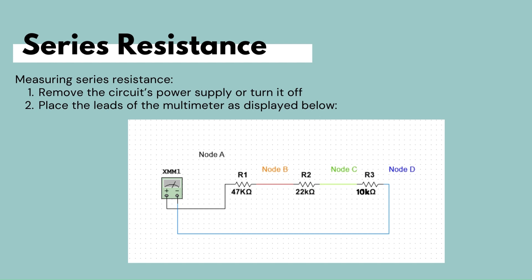To measure the resistance of a series circuit, we identify the different nodes. The 47kΩ resistor connects to the 22kΩ through node B, and the 22kΩ connects to the 10kΩ through node C. To measure the combined series resistance, we connect the positive lead of the multimeter at node A (at the start of the 47kΩ) and the black negative lead at node D. Note there are no polarity requirements — the leads can be switched without affecting the measurement result.